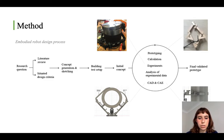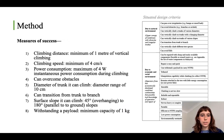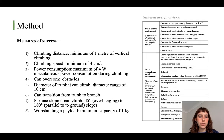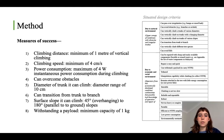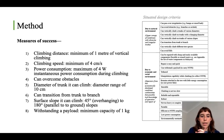The bottom two images show me using CAD to prototype and develop the tail. These are the criteria I came up with. On the left are the measures of success — the criteria the final robot had to achieve to be deemed successful. On the right are the situated design criteria, which arise from the robot's context of use, broken down into the natural environment and also the social and economic environment it would be in.